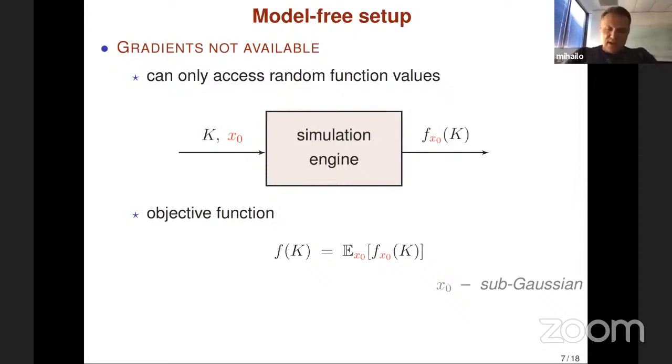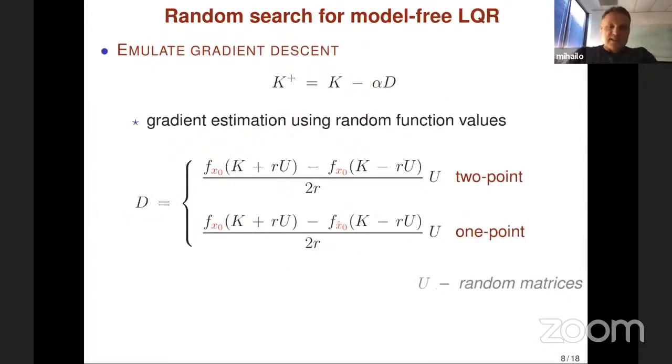The real LQR cost is obtained by computing expectation over initial conditions, which we assume to be zero mean unit variance with bounded sub-Gaussian norm. This slide summarizes what we mean by random search method for model-free LQR. The method attempts to emulate gradient descent by using random function values to estimate the gradient. We are tapping into the area of derivative-free or zero-order optimization.